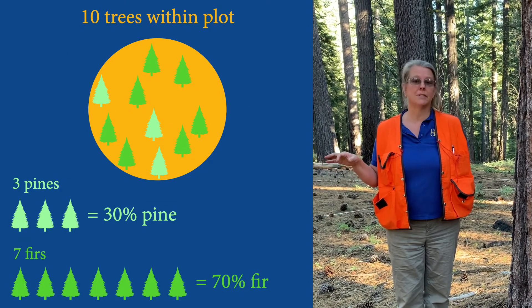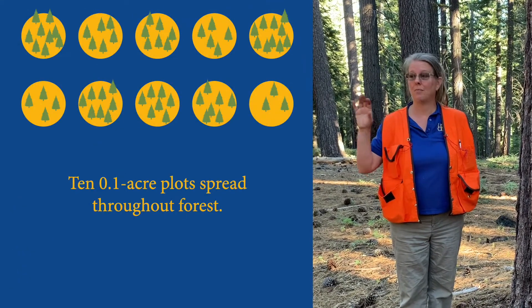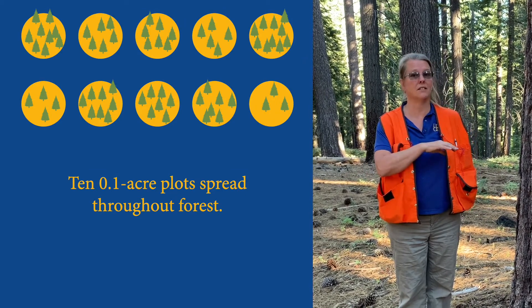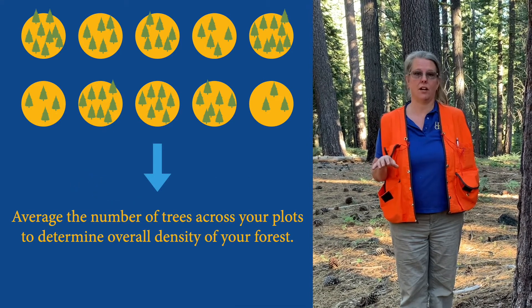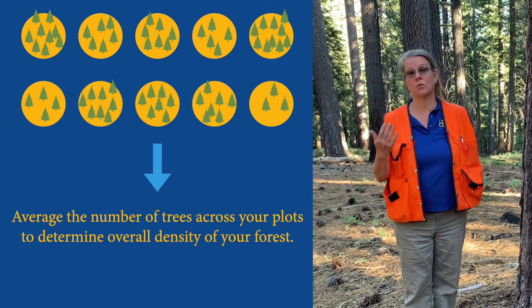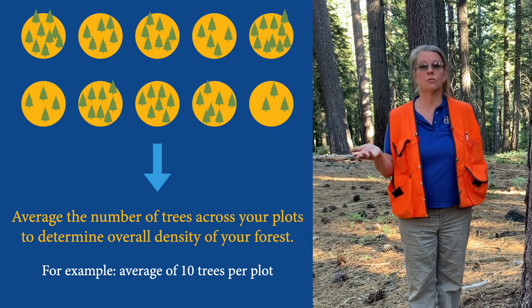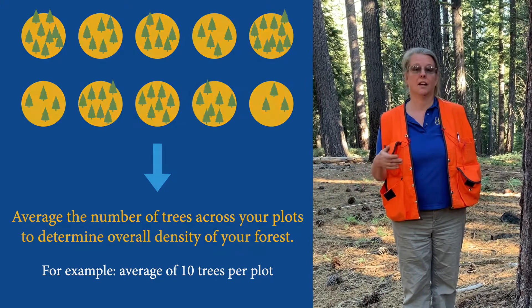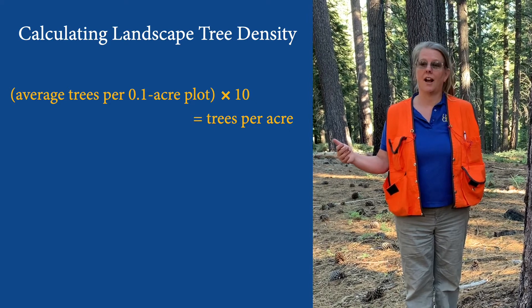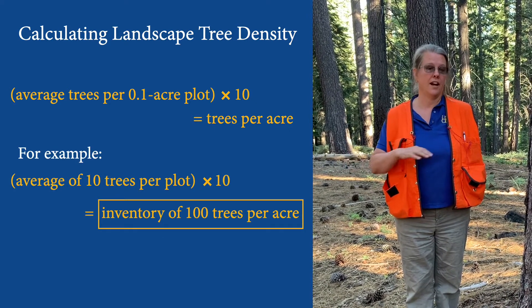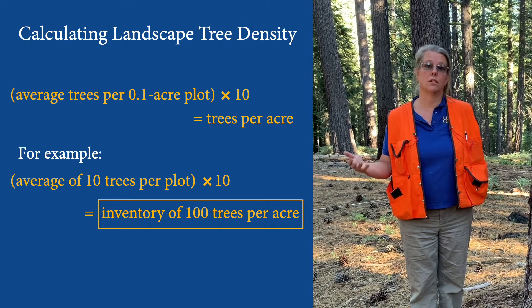That's only one plot. Since I'm sampling, I want to do a bunch more. Say I put in 10 plots across my landscape — that means I've done 10 one-tenth-acre plots. What I'm going to do is average the trees I found across that area. In some plots there were 12 trees, some 20, some only four. Let's say my average number of trees per plot was 10. With a tenth-of-an-acre plot and an average of 10 trees, that means in one acre I have an average of 100 trees. Those plots represent an inventory of 100 trees per acre.